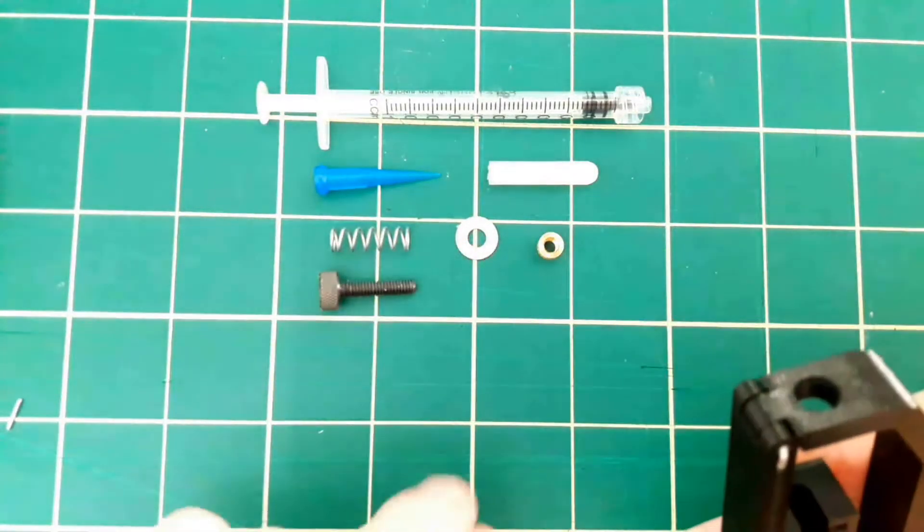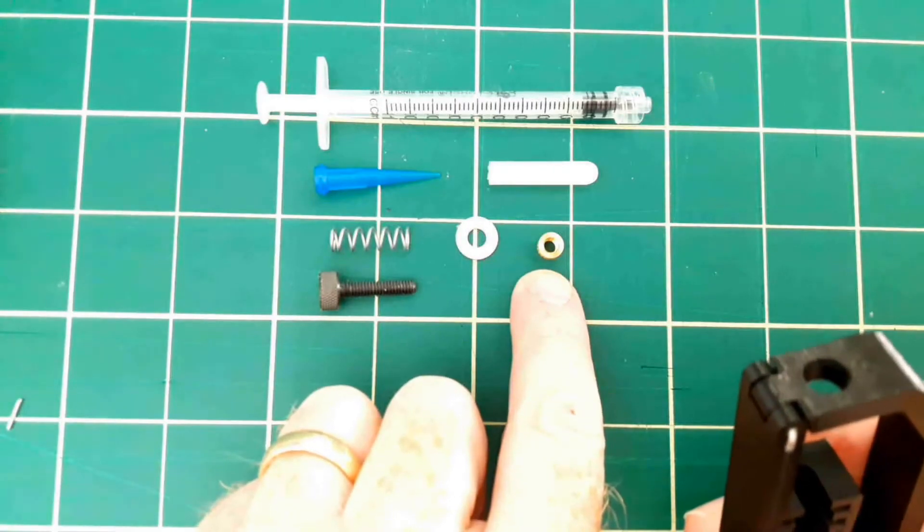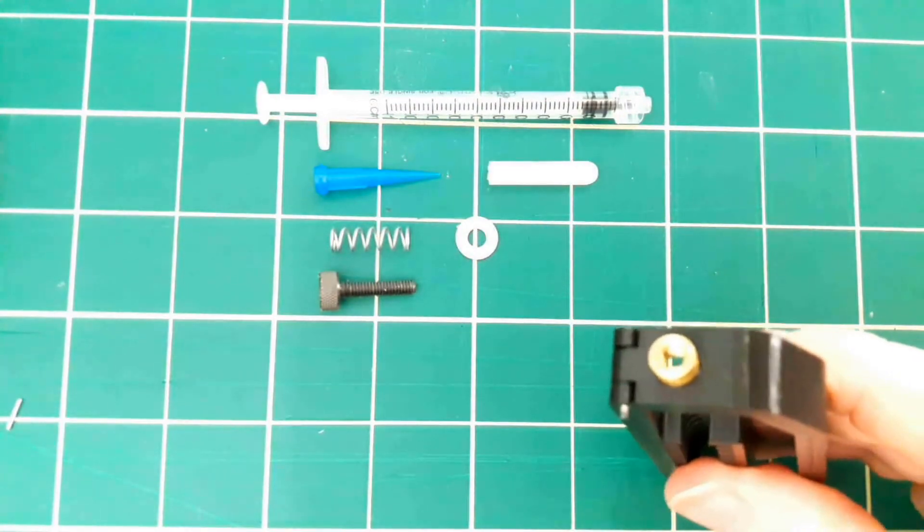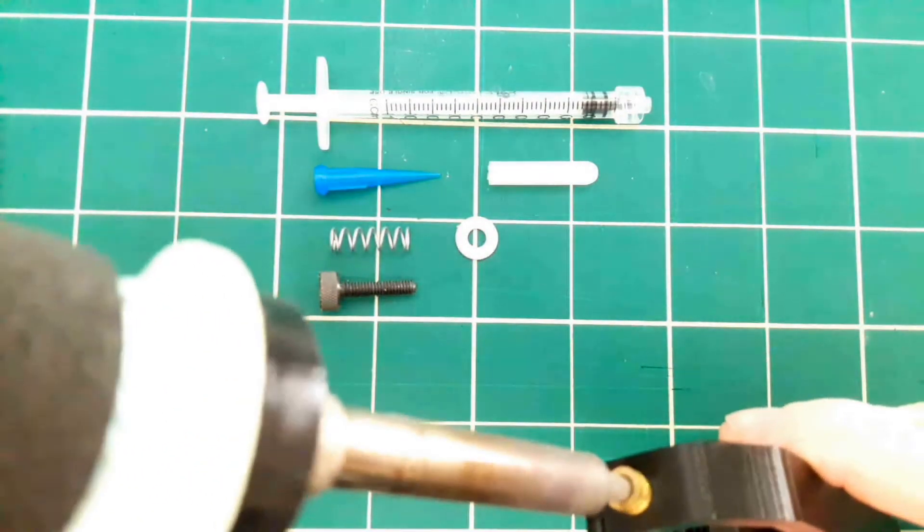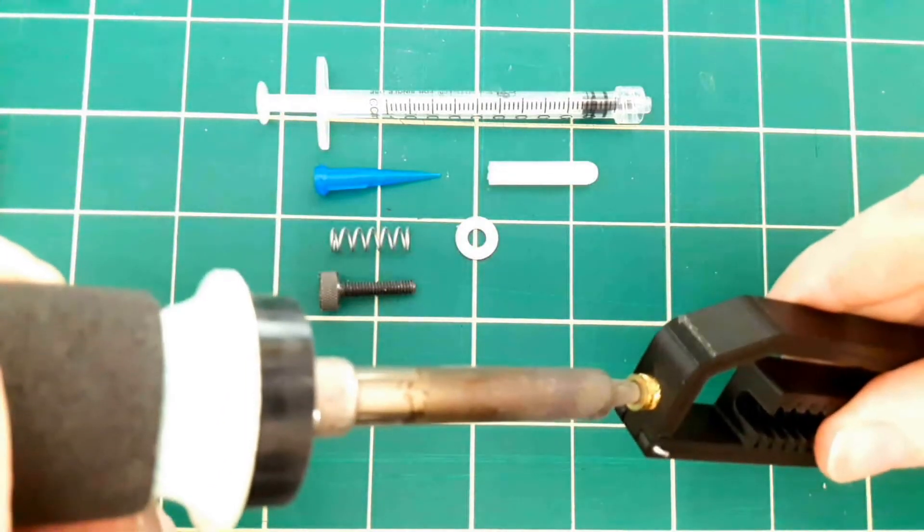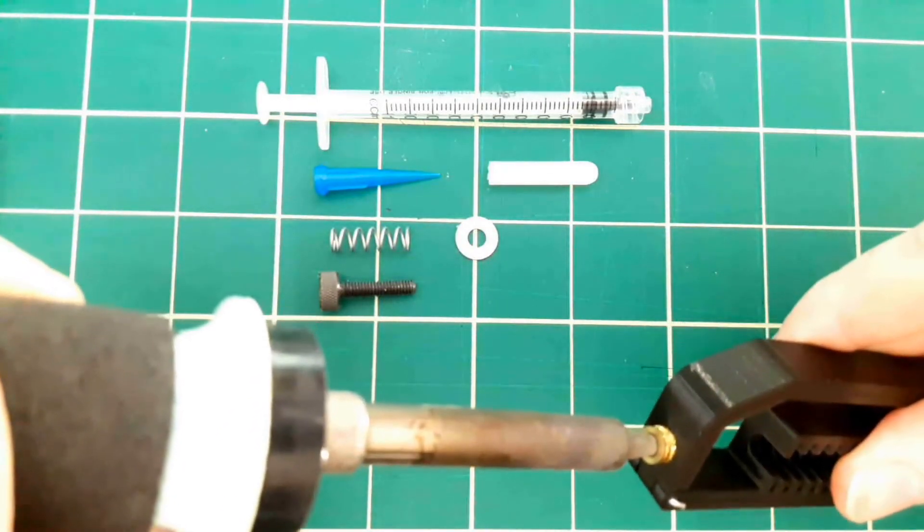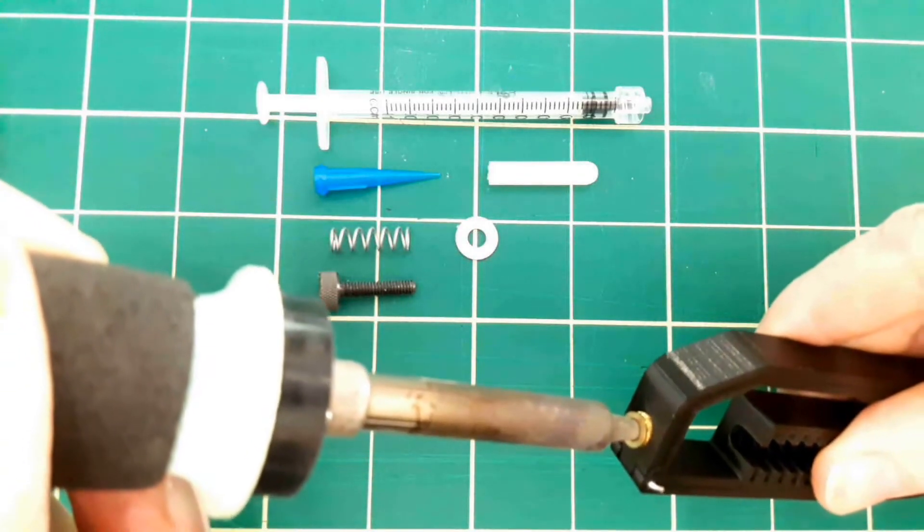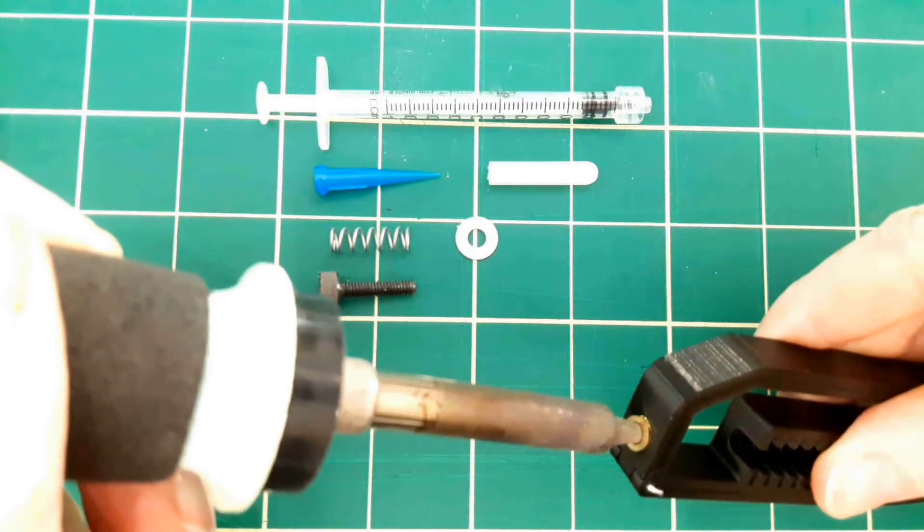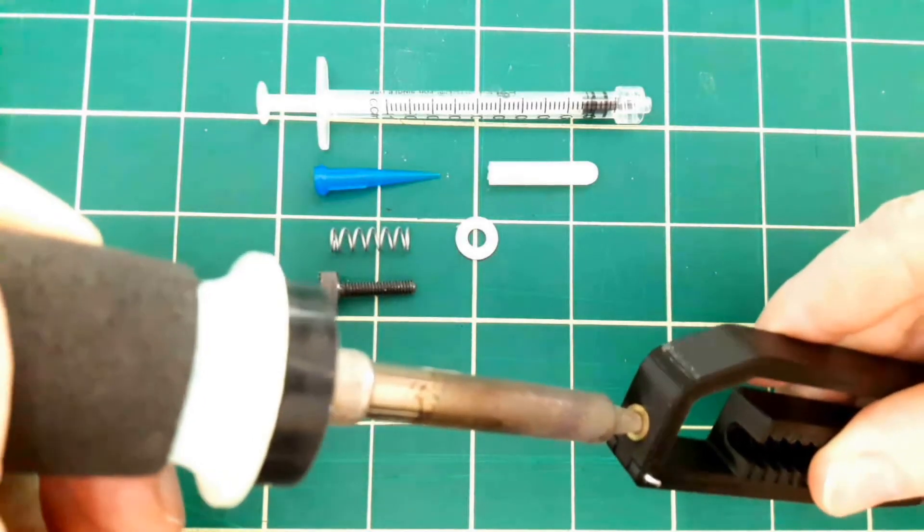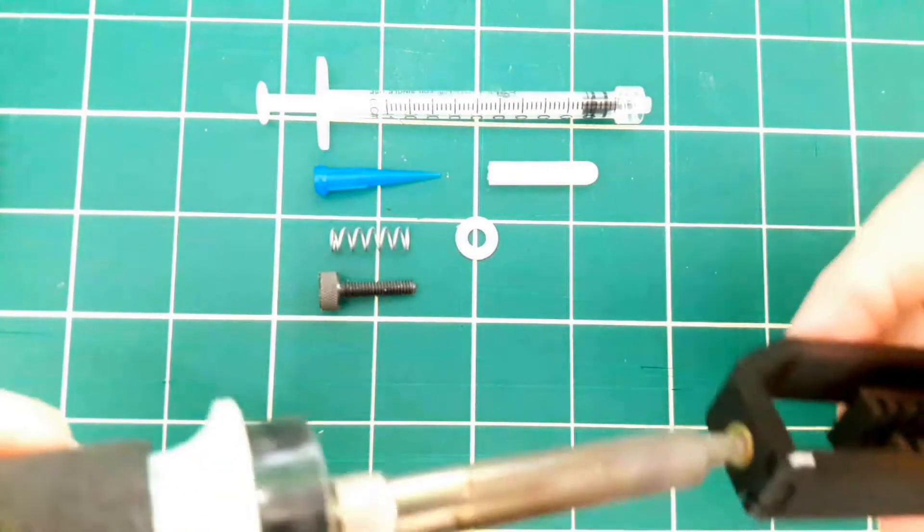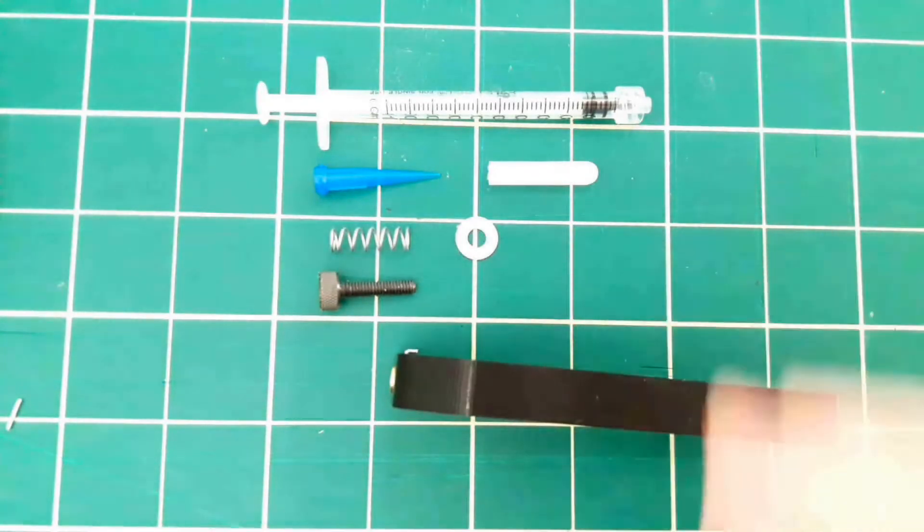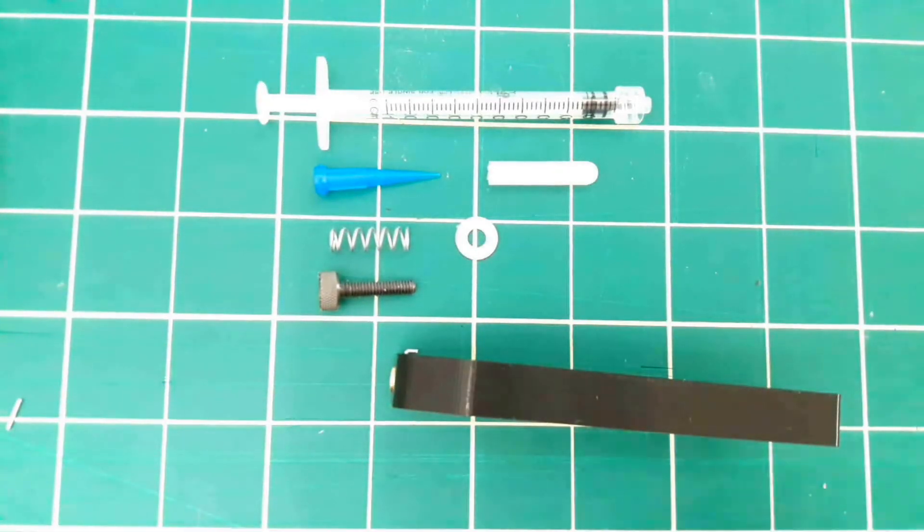Second order of business is to take this brass 8-32 threaded insert and to sink it into this hole with a soldering iron. Not quite straight, that's better. Okay now we'll let that cool a little bit.